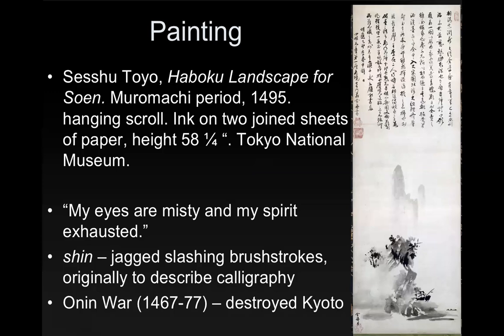In it, it says: 'My eyes are misty and my spirit is exhausted.' A little of this romantic tragedy is something you see in a lot of stories about Japanese artists. They called this style of painting shin — these jagged, slashing brushstrokes — which was originally used to describe calligraphy. In some ways it is calligraphic, but we also see a lot of washes and thick colors.